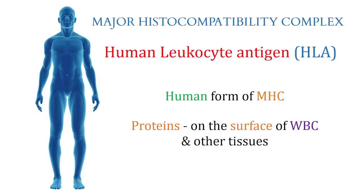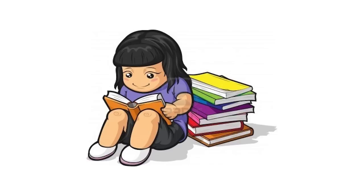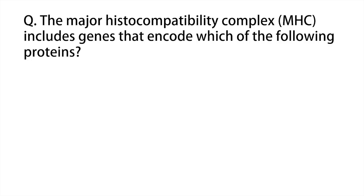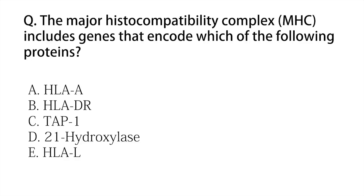In humans, the MHC is simply called Human Leukocyte Antigen, that is HLA. So the key takeaway is that human leukocyte antigens are the human form of MHC, and these are the proteins located on the surface of white blood cells and other tissues in the body.